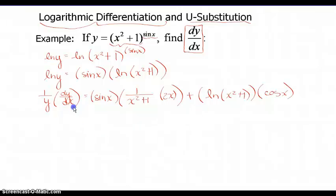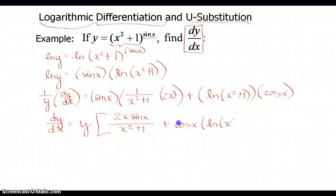If I clean that up, I'm going to multiply both sides by y because I'm solving for dy/dx. That is y times, the numerator here is 2x times sin(x) all over (x²+1), and this is plus cos(x) times ln(x²+1).